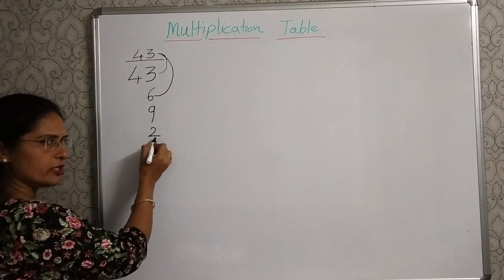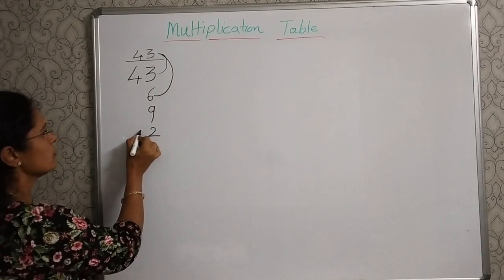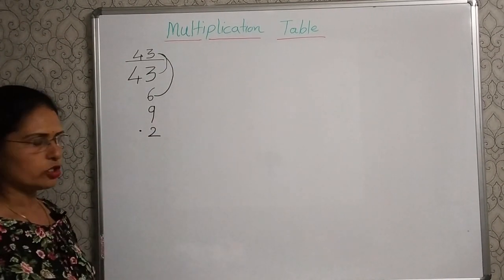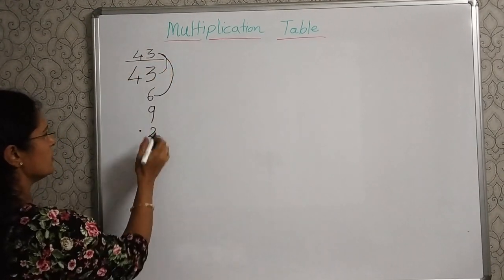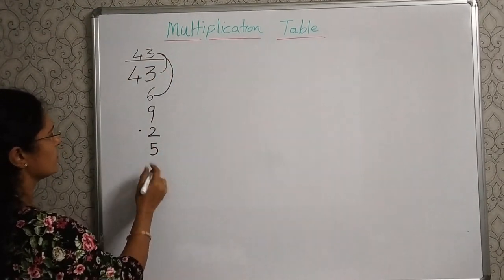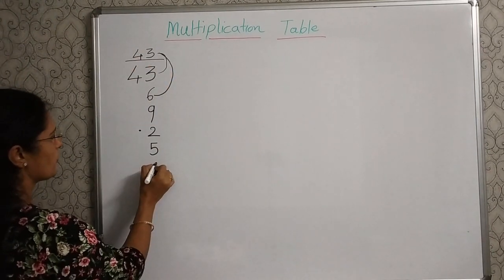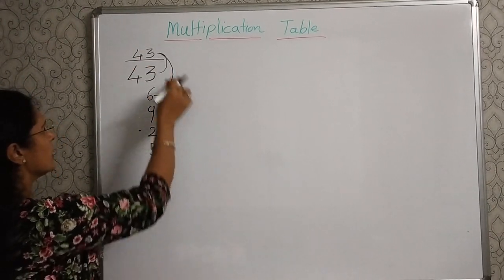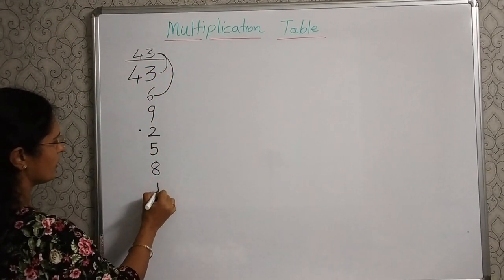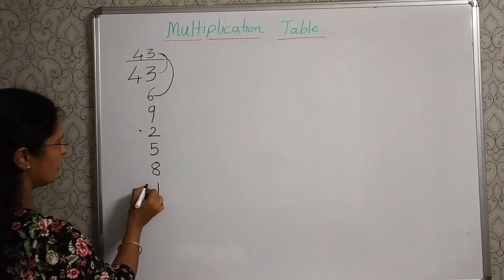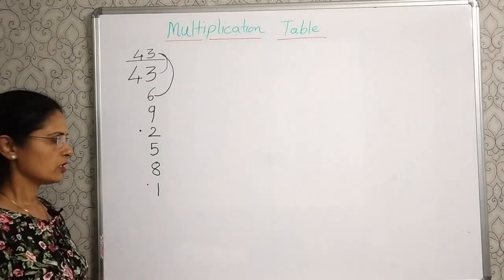Write 2 here and the carryover 1 will give it as a dot. Now, 2 plus 3, 5. 5 plus 3, 8. 8 plus 3, 11. So, 1 here and for the carryover give the dot.